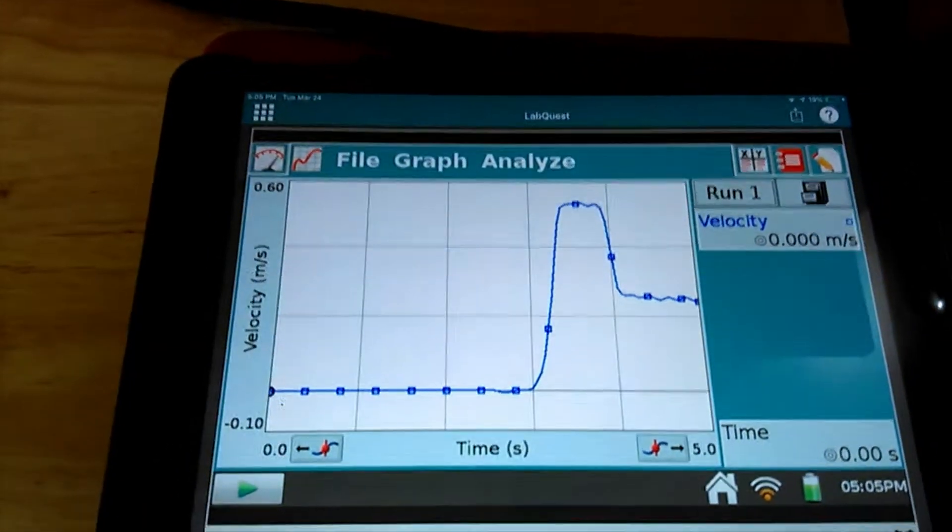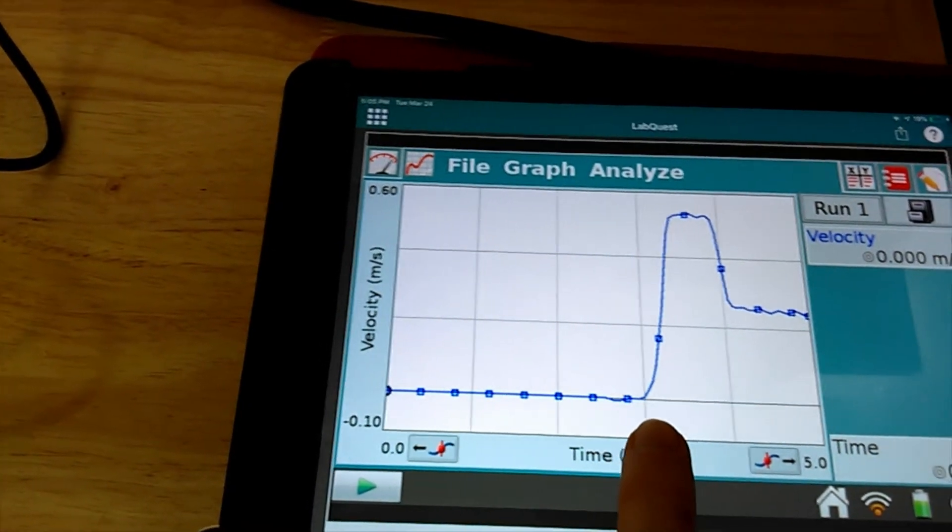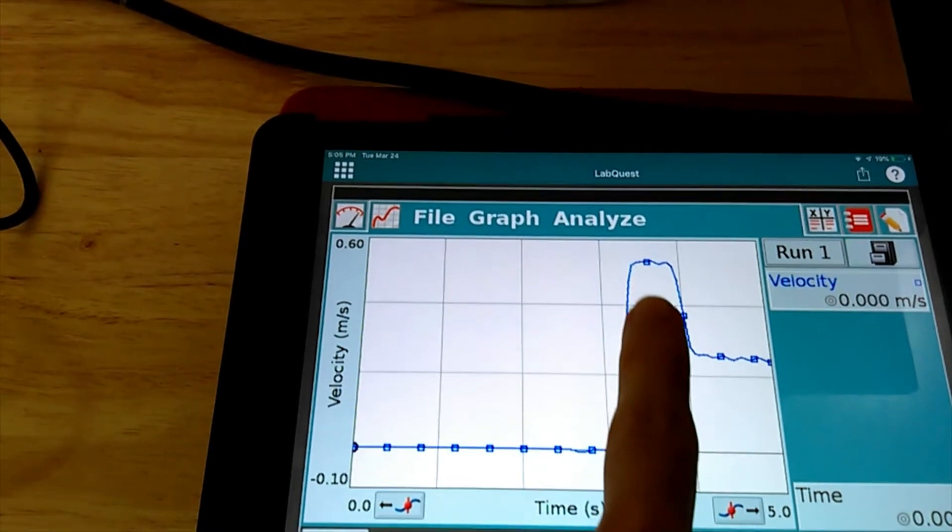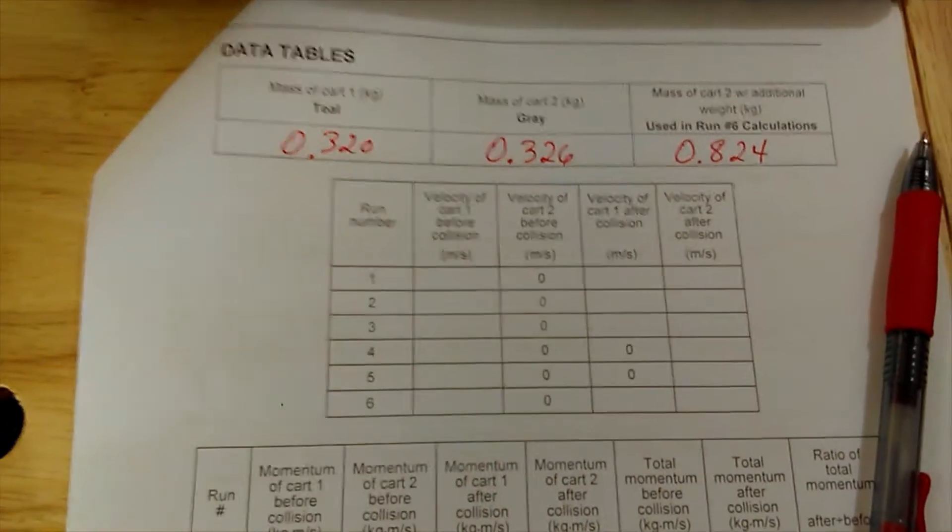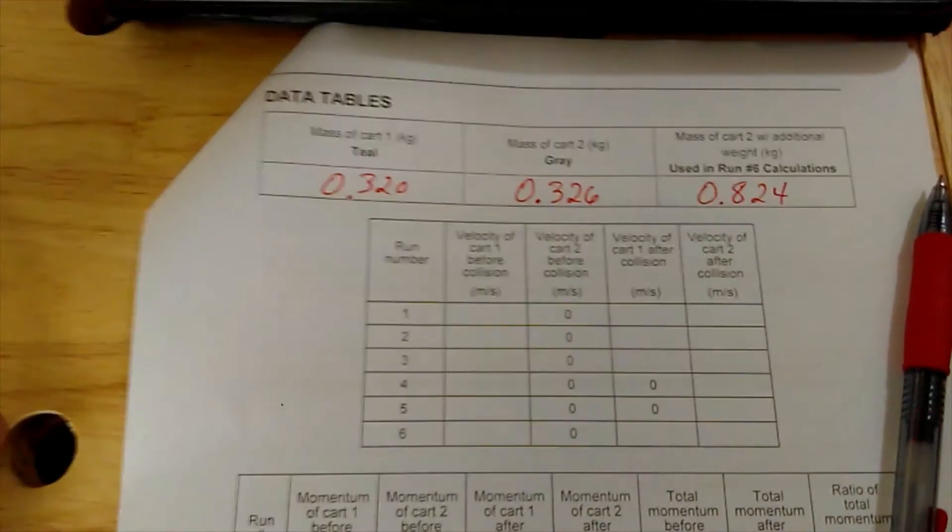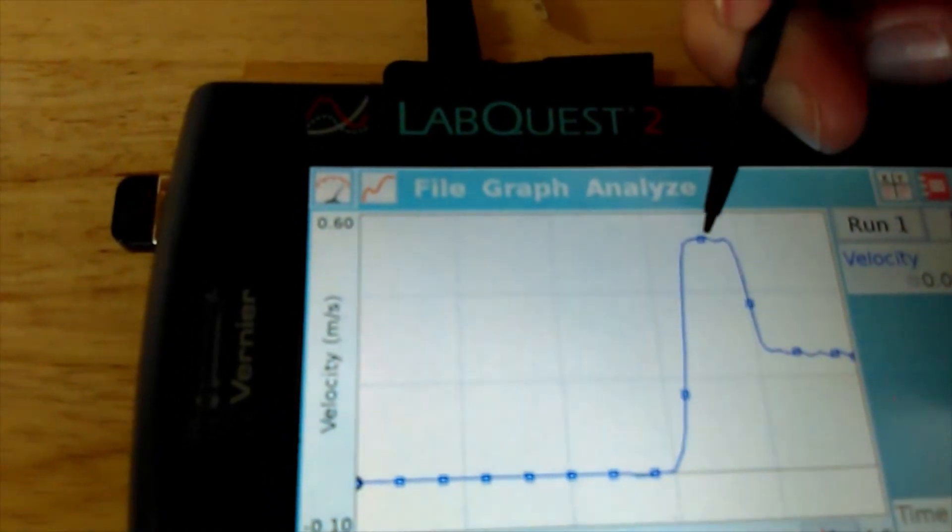Looking at our data, we've got something like this. We had no velocity at all, I gave car one a push, it's got this large velocity, it collides with car two, and now everything's moving slower. Looking at the data table, we need to find the velocity of car one before the collision actually occurs. I'll show you on the larger screen.